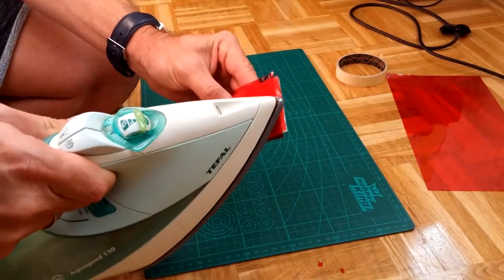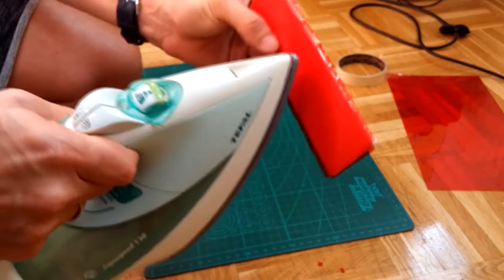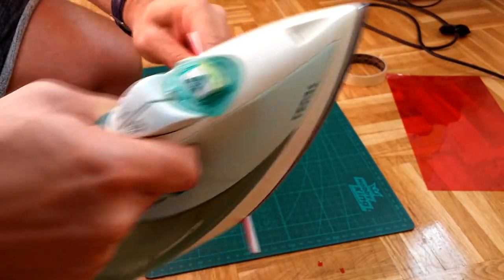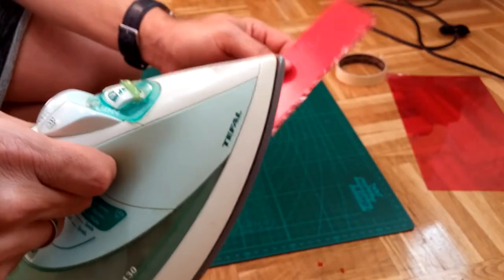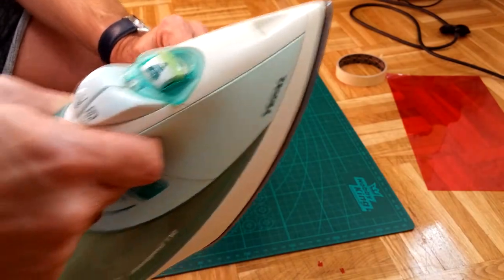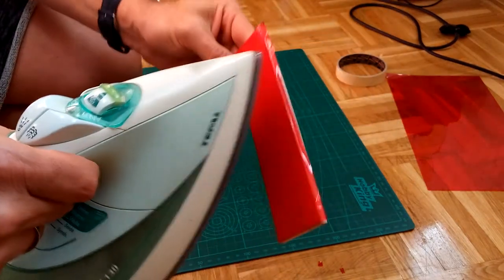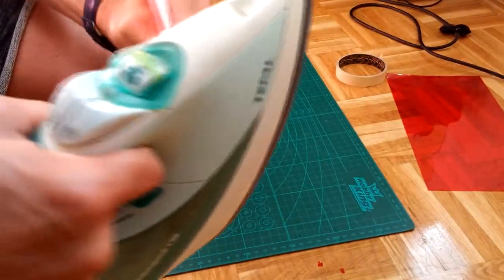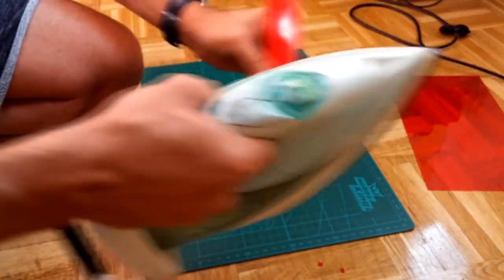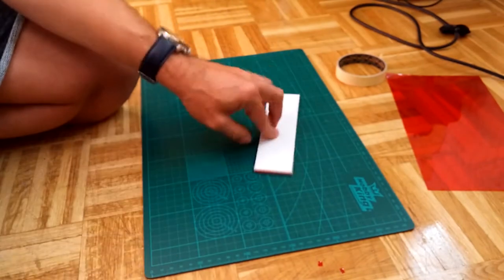Right. And now just also from the center, just iron these edges. One by one. Again, from the center on the longer surfaces or longer edges. There. That's it. One side is finished.